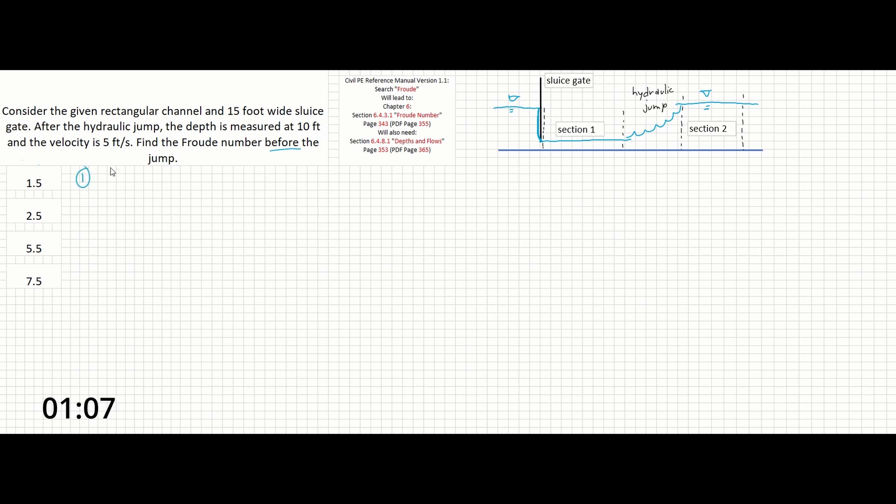Step 1, we're going to solve for the total flow in the channel. This part is easy. Q equals V₂ times A₂ since we are given the velocity after the jump. So this is going to be 5 feet per second times the area, which is the 15-foot width of the sluice gate and the 10-foot depth measured. Solving for this, we get Q equals 750 cubic feet per second.